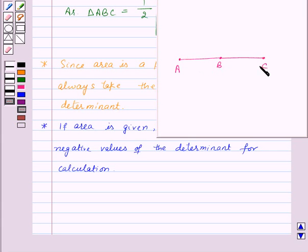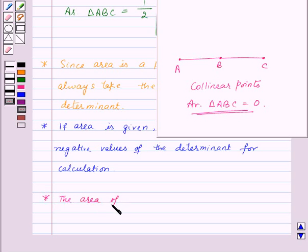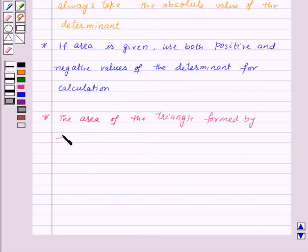If we have three collinear points, then there will be no triangle. That means the area of triangle ABC will be equal to zero. So the area of the triangle formed by three collinear points is zero.